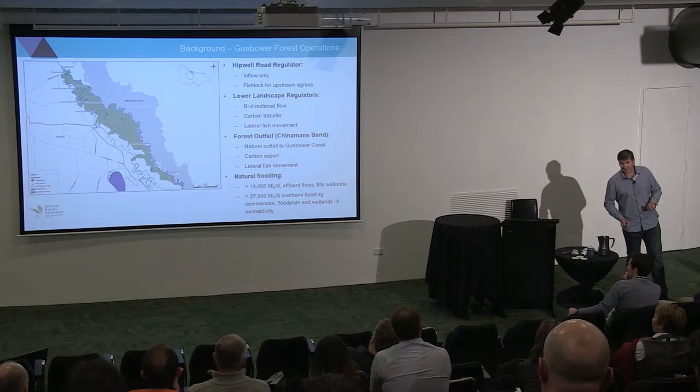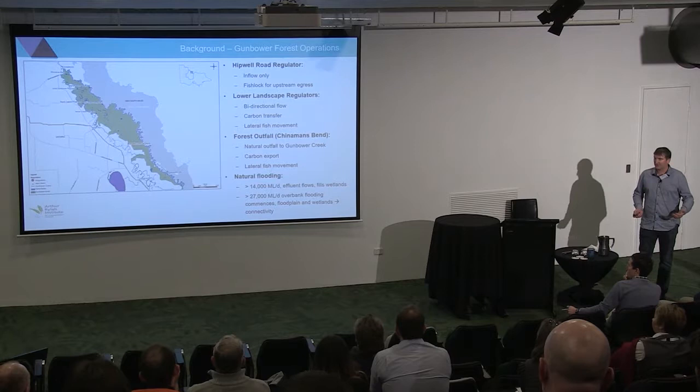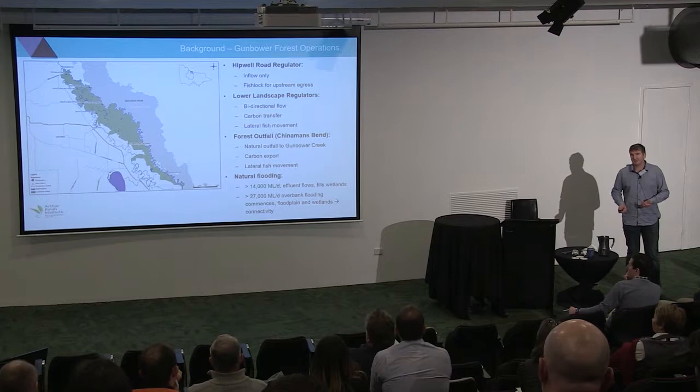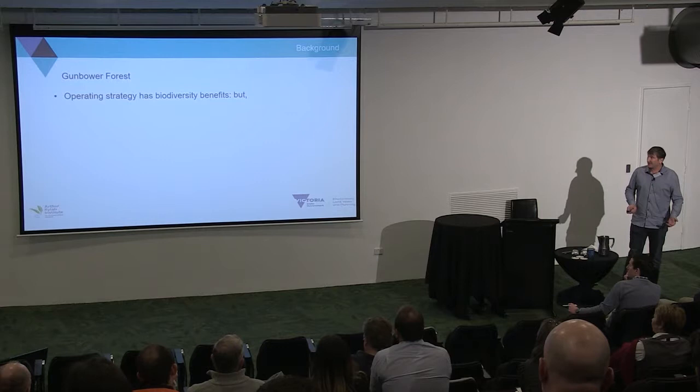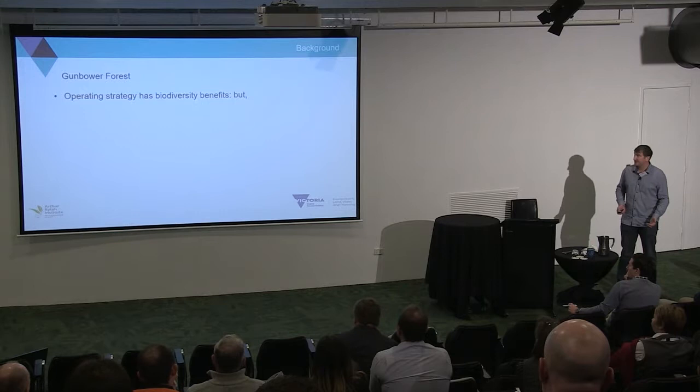For this system, with natural floods around 14,000 megalitres per day, some of the lower-lying effluent fields and wetlands start filling. But it's really at those 27,000 megalitres per day flows — measured at Torrumbarry Weir gauge — where you get the connectivity and flow through the whole system.